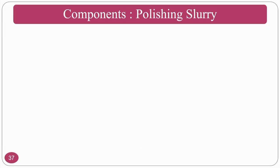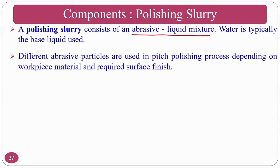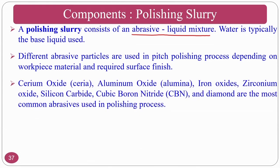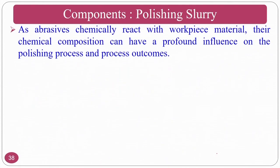Polishing slurry consists of abrasive-liquid mixtures, typically with water as the liquid. Different abrasive particles are used depending on the workpiece material, including Al₂O₃, iron oxide, zirconium oxide, silicon carbide, cubic boron nitride, and diamond. However, cerium oxide (ceria) is the most commonly used abrasive for lens polishing applications and is a very popular polishing compound for a variety of optical materials.